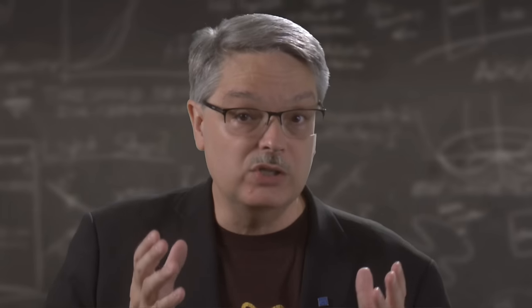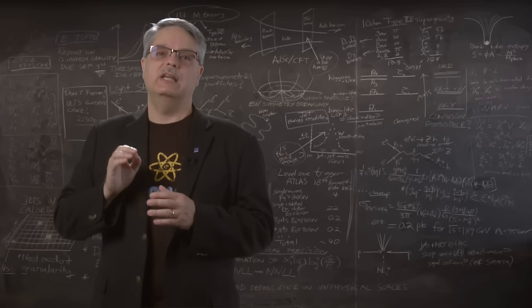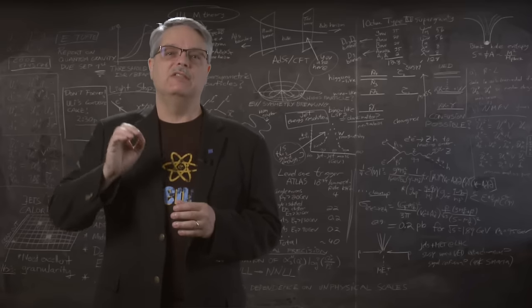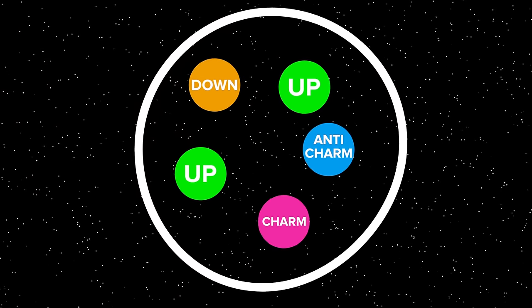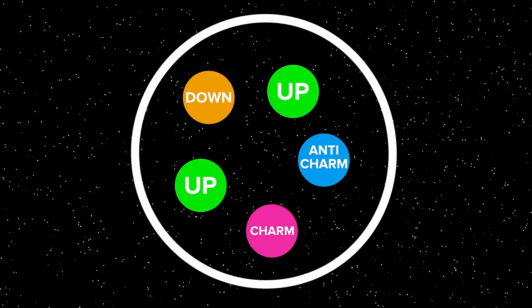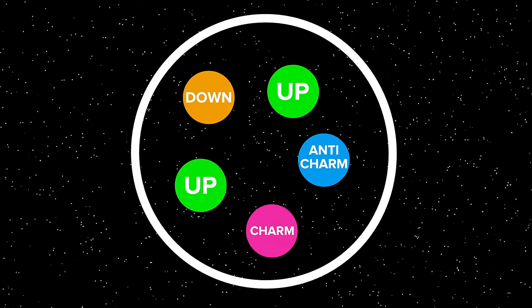So, what about these new pentaquark claims? Well, the LHC-B experiment has announced evidence that they believe supports a pentaquark with two up quarks, a down quark, a charm quark, and an antimatter charm quark. Actually, they claim that they found two different kinds of pentaquarks.